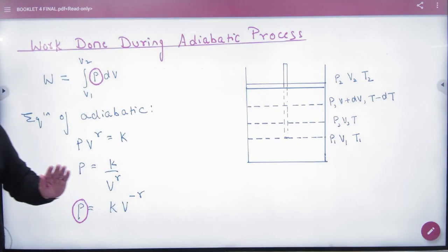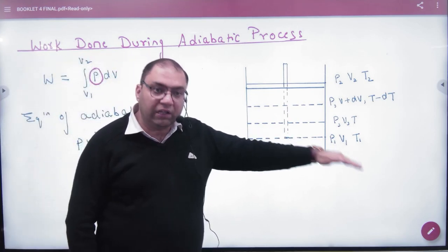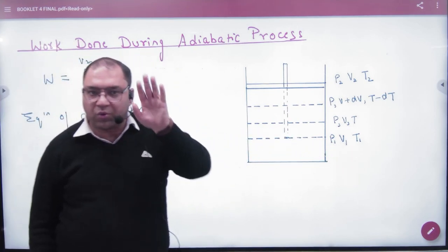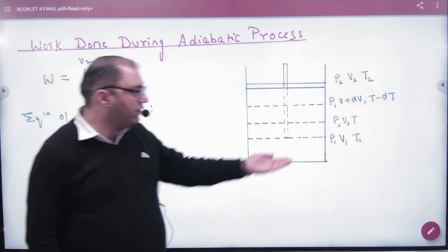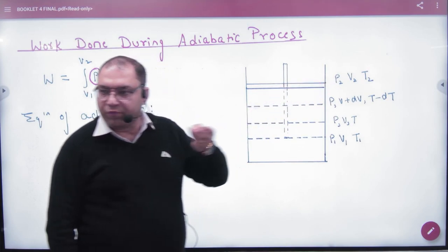Work done during adiabatic process. You have to make a diagram. Piston was here first - P1, V1, T1. Because in adiabatic process, temperature is not constant. Temperature will change. So P1, V1, T1. What is the final state of piston? The gas is at P2, V2, and T2.